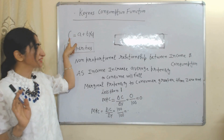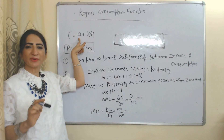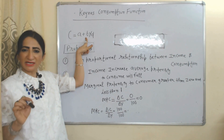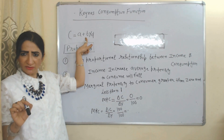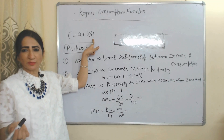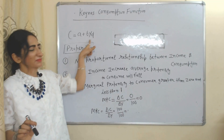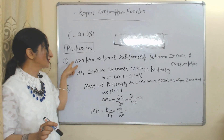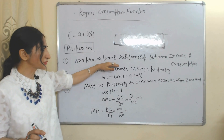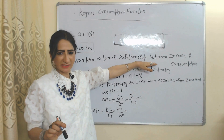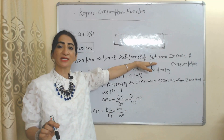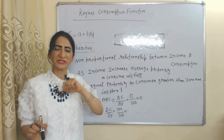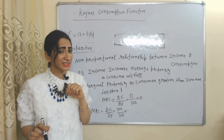The equation is: C equals a plus b times Yd, where C represents consumption, a represents autonomous consumption, b is the marginal propensity to consume, and Yd is disposable income. A key property of absolute income hypothesis is the non-proportional relationship between income and consumption — income and consumption do not increase at the same proportion.